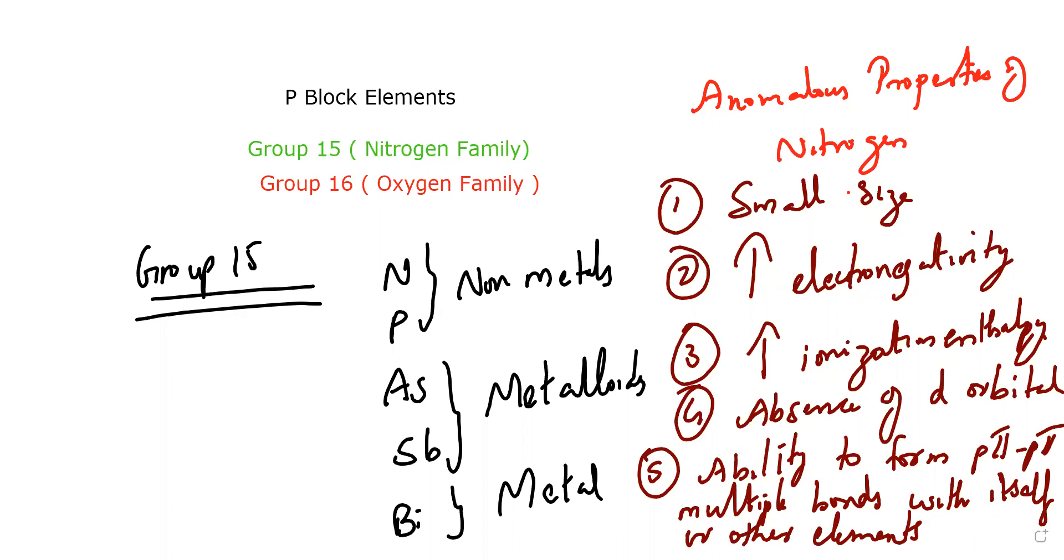Does everyone know what is catenation? If you don't know, type in the chat. Let me write examples: N triple bond N, phosphorus P-P, arsenic As-As. Or let me take carbon. So what is catenation?